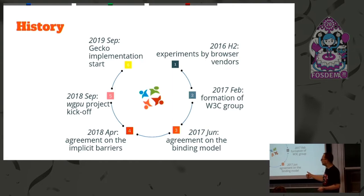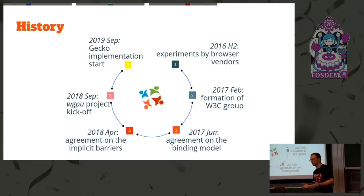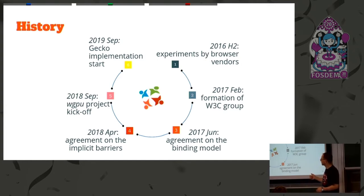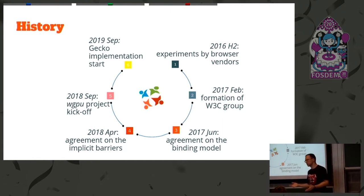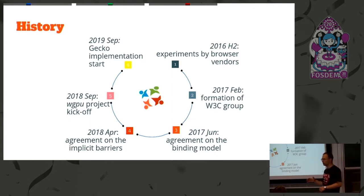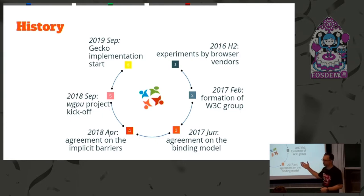In 2018 we agreed on implicit barriers, which is important for setting the direction of how simple the API is going to be to use — because Vulkan and D3D12 require you to explicitly transition resources between states and synchronize between pipeline stages. In 2018 we also started a Rust project called WGPU, which implements WebGPU for native platforms. And in 2019, we started integrating it into Gecko and using it as the basis for the WebGPU implementation in Gecko — the engine for Firefox.